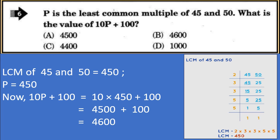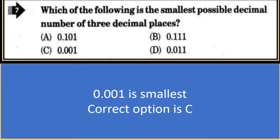P is the least common multiple of 45 and 50. What is the value of 10p + 100? The LCM of 45 and 50 is 450, so p = 450. Substituting: 10 × 450 + 100 = 4500 + 100 = 4600. The correct option is B.